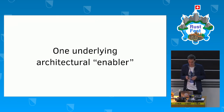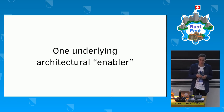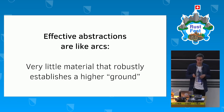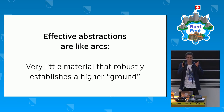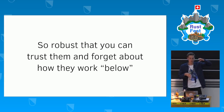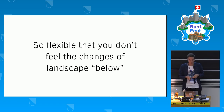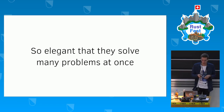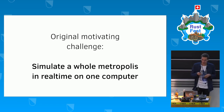I want to talk in this presentation about what I feel is the one underlying architectural enabler: actor systems, which I would call an effective abstraction. For me, effective abstractions are like arcs — they need very little material but allow you to robustly establish a higher ground which is so robust that you can just stand on top and trust them, even completely forget how everything below works. They're so flexible that if you're building a bridge out of arcs you don't even feel the changes of landscape below. And they're so elegant that they solve many problems at once.